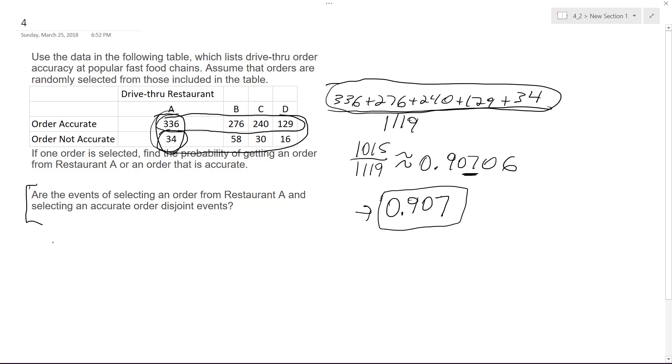They are not. And the reason why is because it's possible to get an order from restaurant A that is accurate or not accurate. So you can, right here, you can end up getting an inaccurate or an accurate one.